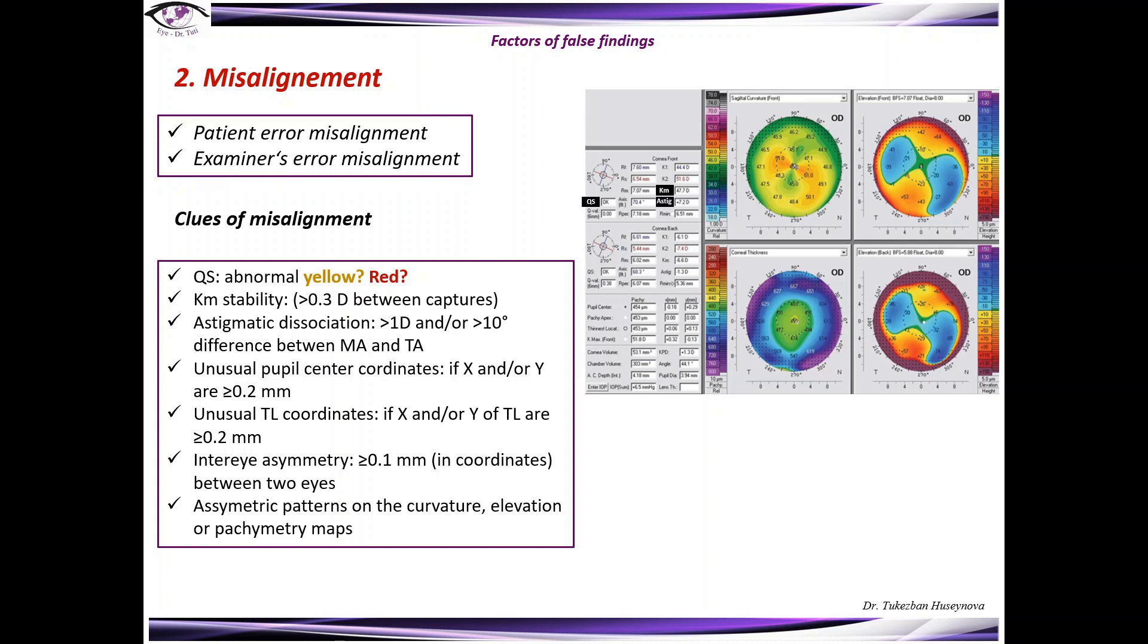Astigmatism dissociation - the normal difference between manifest astigmatism and tomographic astigmatism should be less than one diopter. Unusual pupil center coordinates: if x and y are more or equal to 0.2 mm. Unusual thickness location coordinates: if x and y of thinness location are more or equal to 0.2 mm. Inter-eye asymmetry more or equal to 0.1 mm in coordinates, as well as asymmetric patterns on the curvature, elevation or pachymetry maps could also be a sign of misalignment.